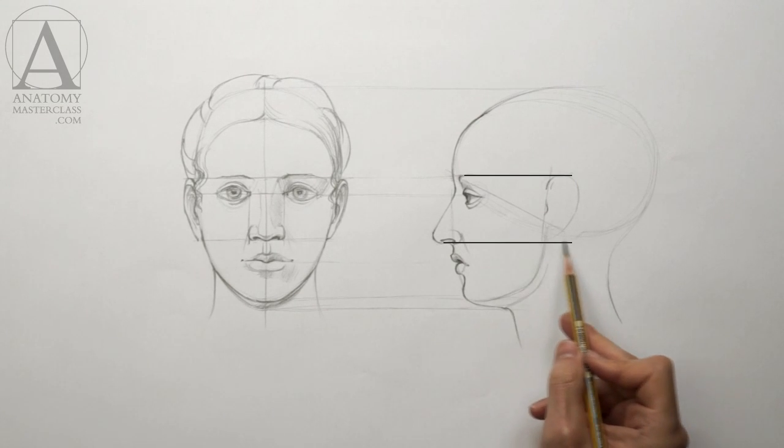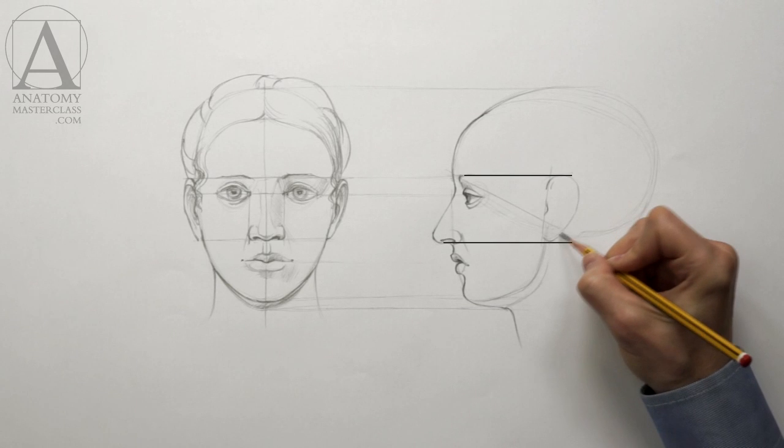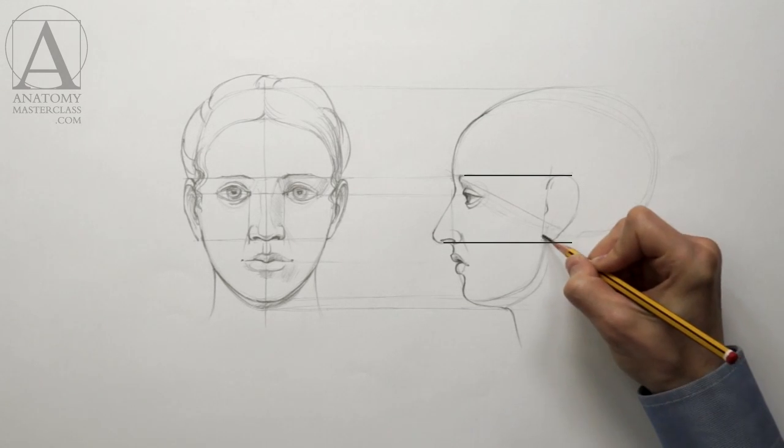The upper edge of the ear lies on the same level as the eyebrow, while the lower edge is level with the base of the nose.